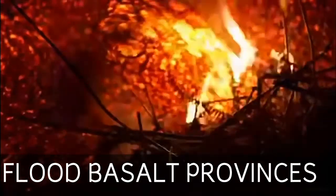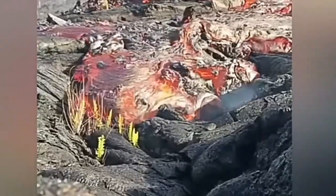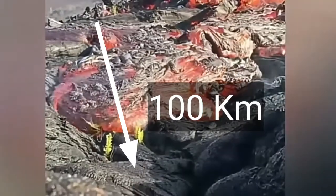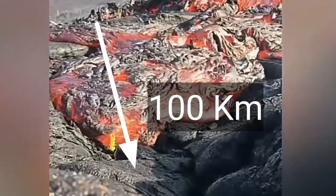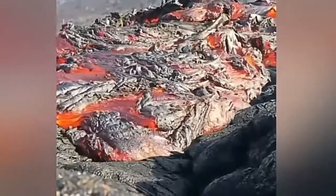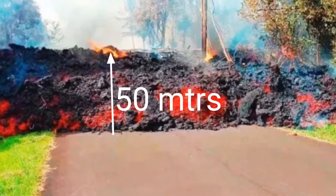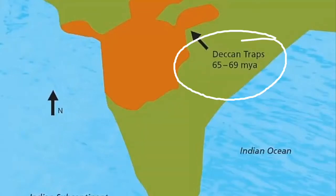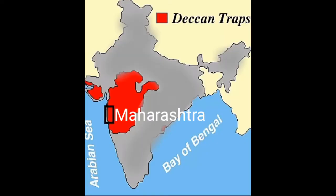The fourth type of volcanoes is the flood basalt provinces. These volcanoes outpour highly fluid lava that flows for long distances, which can extend up to hundreds of kilometers. There can be a series of flows with some flows attaining a thickness of more than 50 meters. The larger flood basalt provinces include the Deccan Traps from India, which cover most of the Maharashtra plateau.